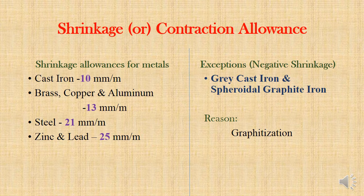There are some exceptional metals. Gray cast iron and spheroidal graphite iron — after the cooling process, the casting product becomes oversized compared to the pattern. This is called negative allowance, which happens because of graphitization leading to an increase in volume. For casting these two metals, a smaller-sized pattern is needed.